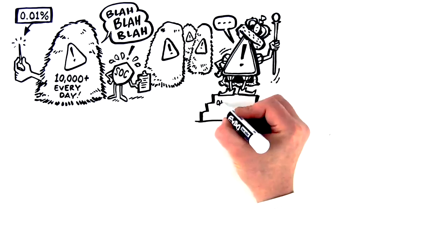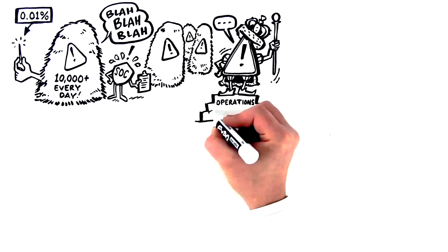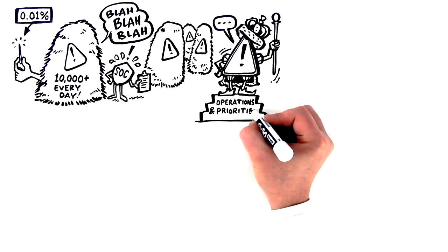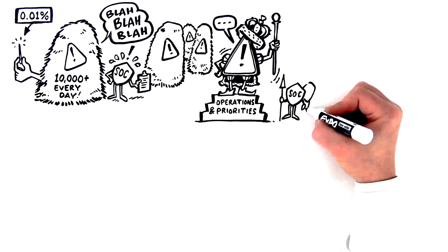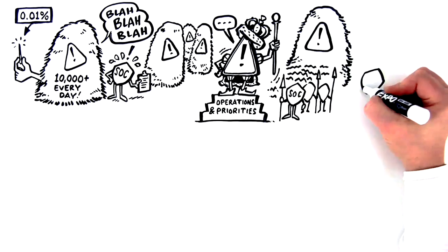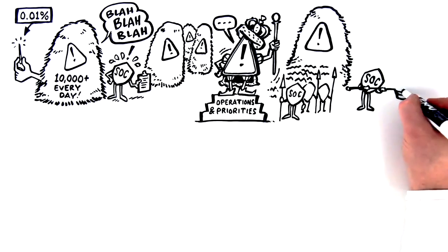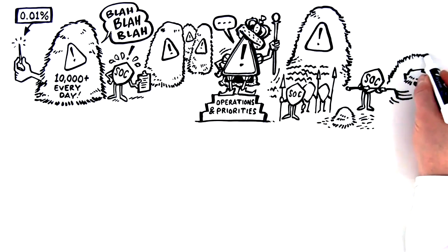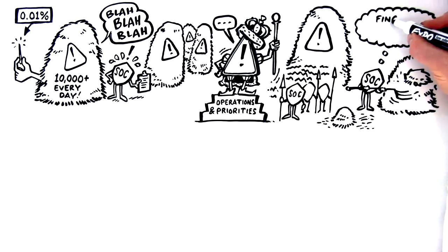When SOCs have to alter operations and priorities to manage the overwhelming onslaught of alerts, they either have to constantly grow their armies to sift through ever-growing haystacks for the needles or, and this happens most often, they'll ignore huge amounts of the haystack, hoping there's no needle in it.